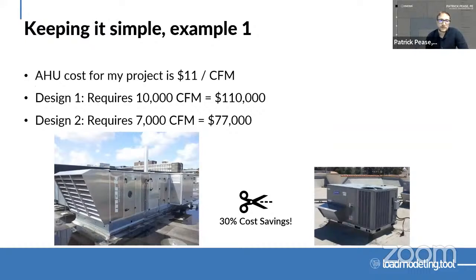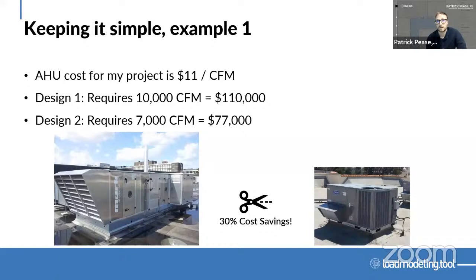For example, perhaps air handling units for a project cost $11 per CFM all-in for a package system. If one design requires 10,000 CFM based on internal loads and glazing, that's about $110,000. Now if I have an alternative design where I've reduced plug loads, gone with slightly higher performing glass, and reduced the peak CFM needed to cool the space to 7,000 CFM, I get a 30% cost savings on that unit alone. Even before the formal cost estimate, I can do these quick calculations as I'm designing to see if I'm making a positive impact and optimizing costs.